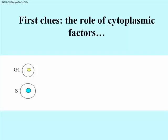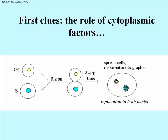Here we have cells in G1 and cells in the S phase — eukaryotic cells showing their nuclei in different colors. We're going to fuse them with polyethylene glycol, and we're going to add tritiated thymidine to the fused cells. After a short period of time, we'll spread those cells on a slide and make autoradiographs. What people saw was that both nuclei contained newly synthesized DNA, meaning both nuclei underwent replication. You would expect that in the blue nucleus from a cell already in S phase, but you would not expect it in a cell in G1, which is prior to S phase — and yet the G1 nucleus is making DNA.